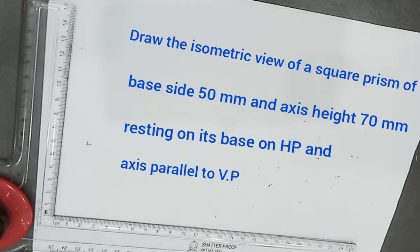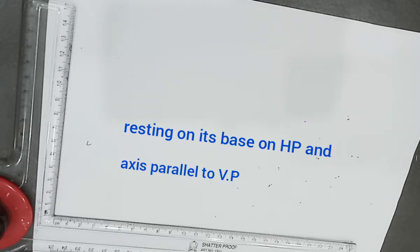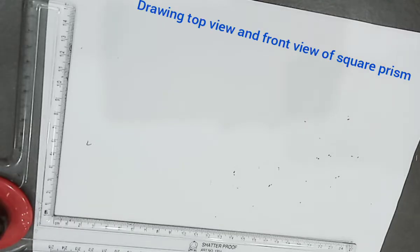The prism is resting on its base on HP and axis parallel to VP. So the prism resting on its base on HP means its top view is a square shape and front view will get a rectangle shape. As a first step we have to construct the orthographic projections of the square prism.